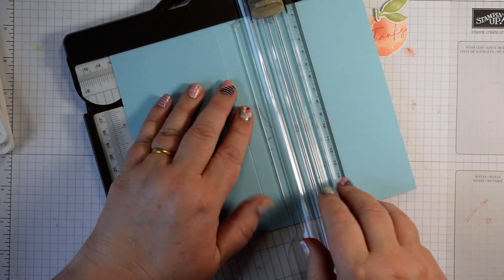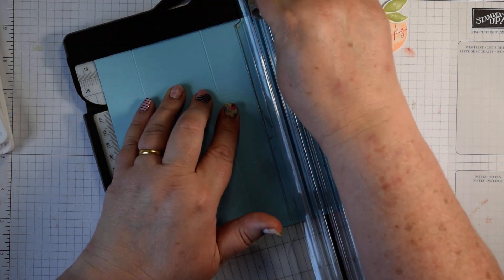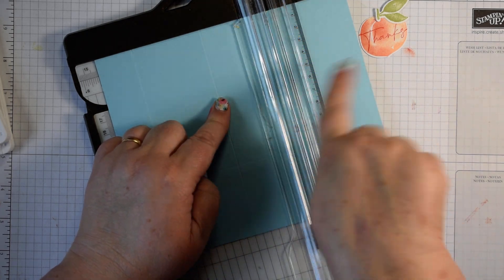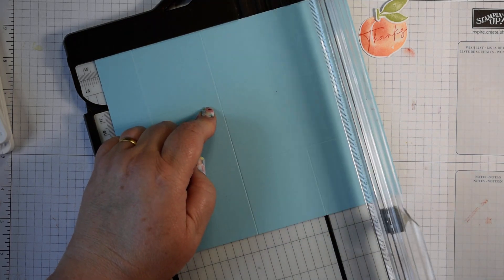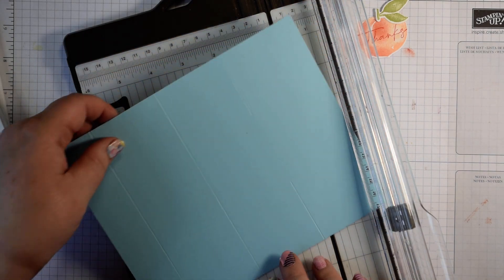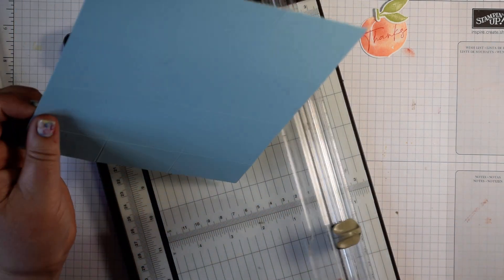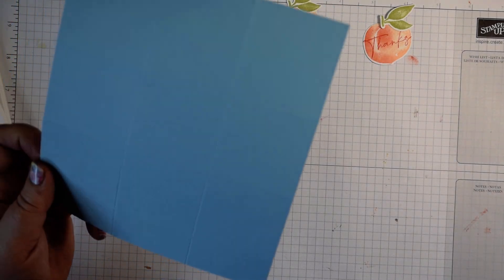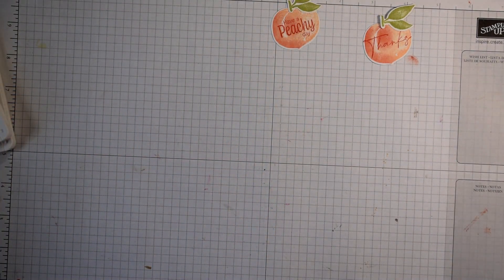Three centimeters first and flip it around and score at 8.5. And then at 14 centimeters, I'm just going to score that top section and that bottom section. So not the middle bit. If you do end up going over, it's not the end of the world. Don't worry at all. Okay. And then we're going to cut some layers as well.